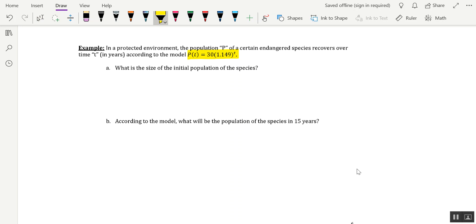So part A wants us to determine the initial population of the species. In terms of the exponential function, we can get this in a couple of ways. The initial population is referring to the value of C, which is the initial value that we talked about as part of the definition of an exponential function. And in this particular exponential function, that value would be 30. So one way of doing this is just to note that C is equal to 30, meaning 30 animals.